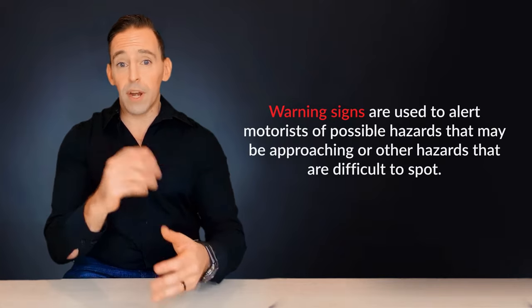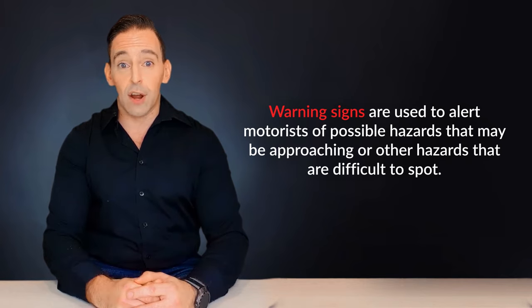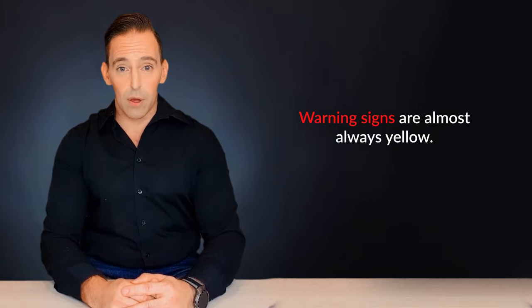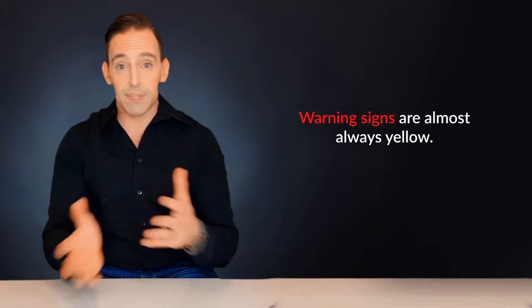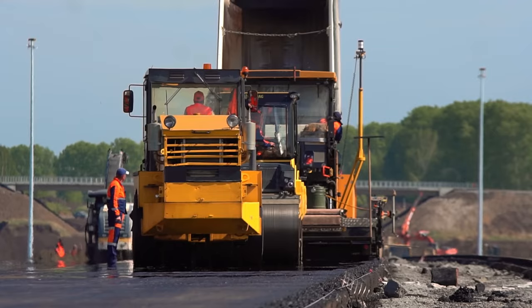Okay, that's regulatory signs. What about warning signs? Warning signs are used to alert motorists of possible hazards that may be approaching or other hazards that are difficult to spot. Warning signs are almost always yellow, but can come in a variety of different shapes and sizes. Warning signs can also be orange, which warns you of certain construction hazards. Orange construction signs are usually placed to indicate the presence of construction workers that are operating on the road and often come with reduced speed requirements.